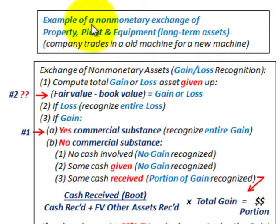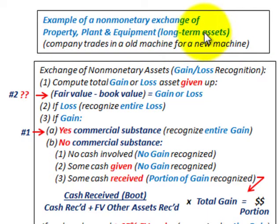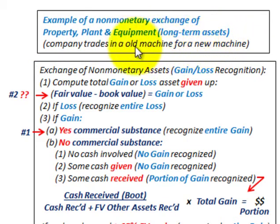Here we're going to be going through an example of a non-monetary exchange of some property, plant, and equipment or long-term assets. Our example is going to be where a company trades in an old machine for a new machine, and they're also going to have to pay some extra cash to receive this new machine.